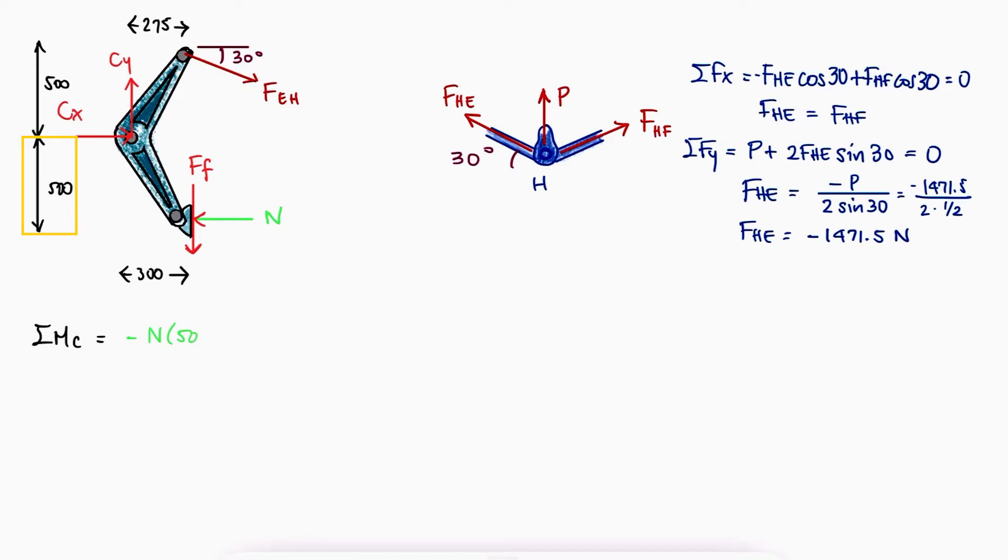N is found at 500, the friction force at 300, the Y component of FeH at 275, and the X component of FeH at 500.